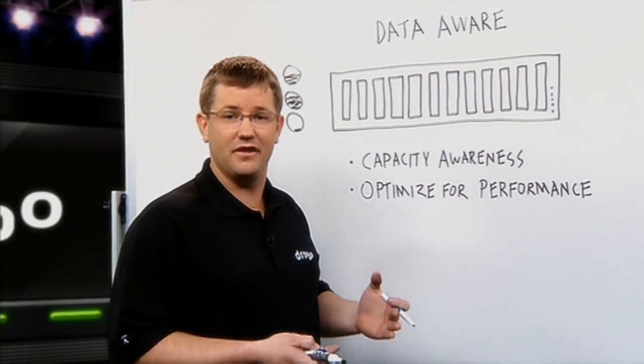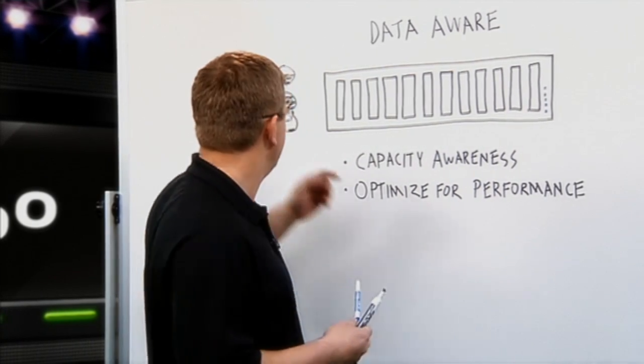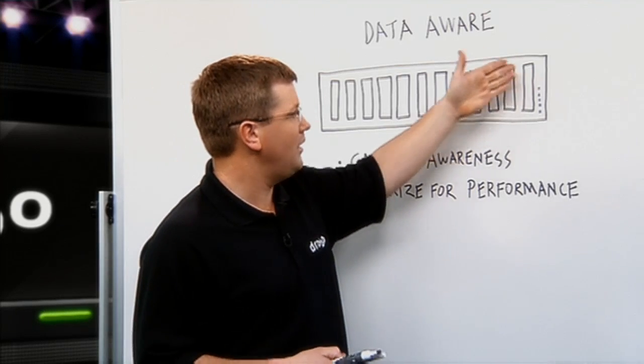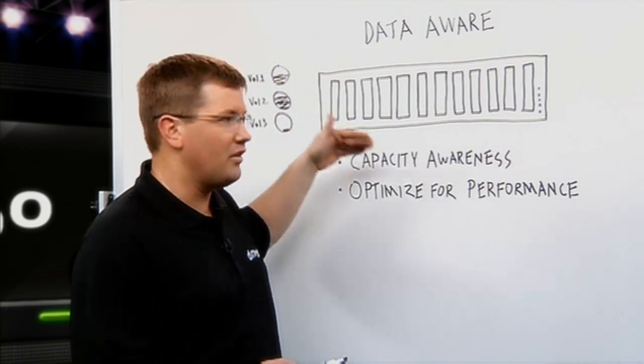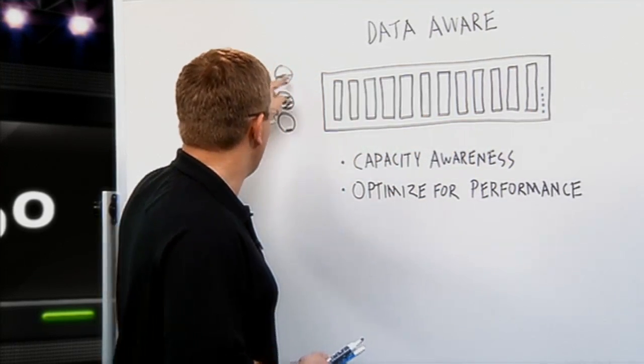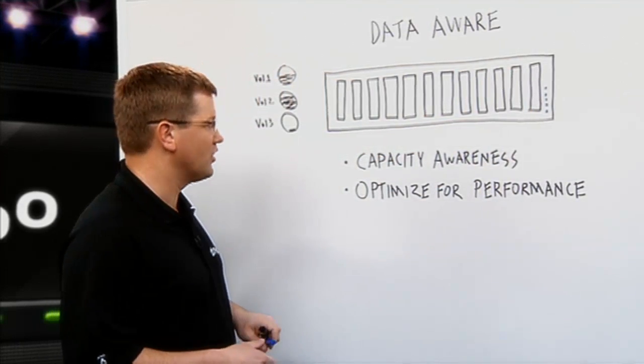As a volume utilizes more of the free space, the capacity gauge will go up, and as data is deleted from the volume, that capacity gauge will go down. That's available because Drobo is aware of what goes on inside the volume.